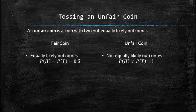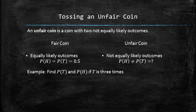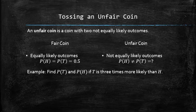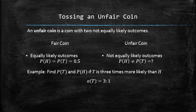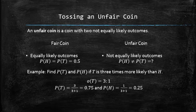For example, let's find the probability of tails and heads if it is known that tails are three times more likely than heads. The given information can be interpreted as the odds in favor of tails being three to one. Therefore, the probability of tails is 0.75 and the probability of heads is 0.25.